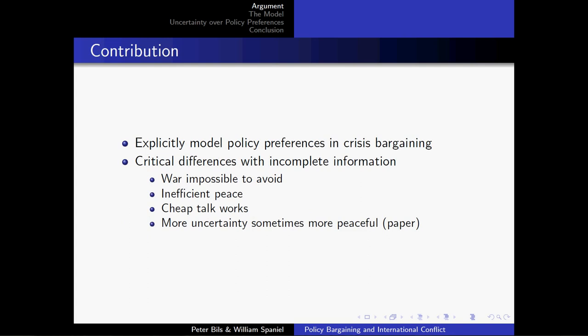So that's our contribution here. We're going to explicitly model policy preferences in crisis bargaining. We're going to see by and large that these results are going to be very similar to what we normally see in the standard bargaining model of war. Indeed, what we'll see is that our model has the Fearon 1995 model as a special case.